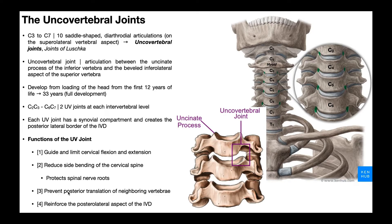Function three: it prevents posterior translation of neighboring vertebrae. Some translation is allowed, but excess is bad. For example, the C4–C5 uncovertebral joint would prevent posterior translation of C4 relative to C5. Function four: it reinforces the posterior lateral aspect of the intervertebral disc. With the UV joints on either side making up that posterior lateral part of the disc, they help mitigate the effects of disc herniations in the cervical spine.